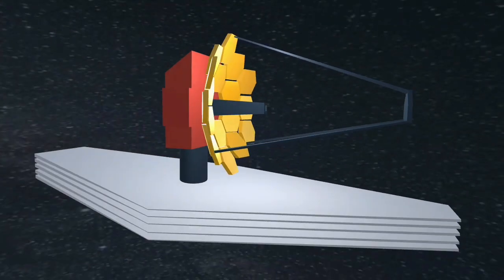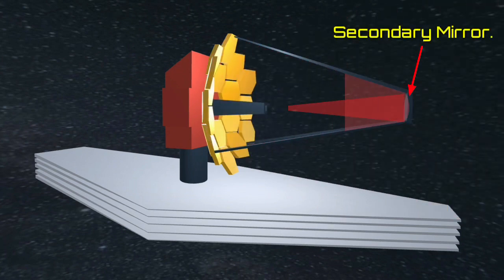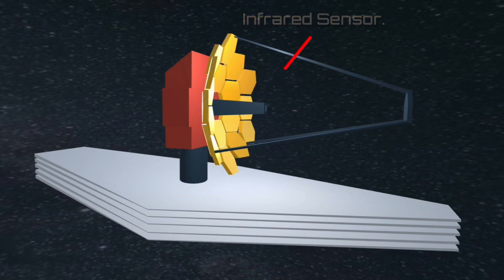This primary mirror acts like a concave mirror, which focuses all the faint infrared light onto a secondary mirror. This secondary mirror redirects all of the collected light onto an infrared sensor.